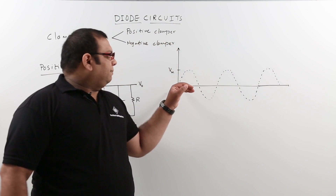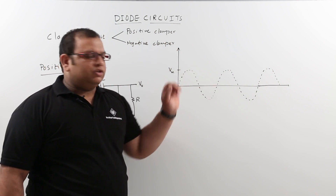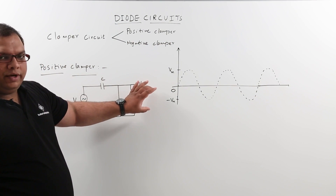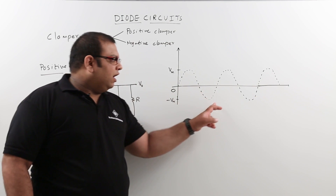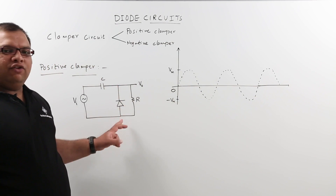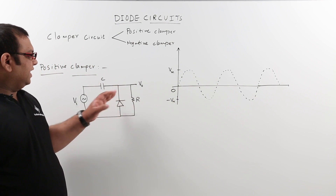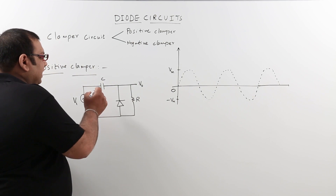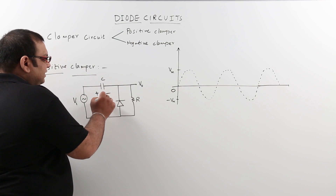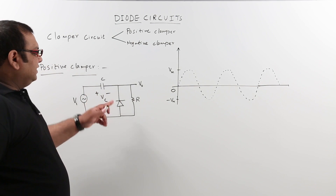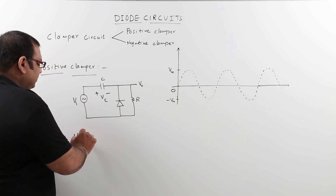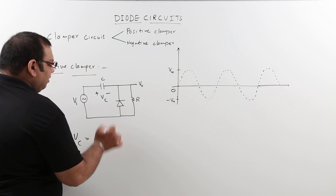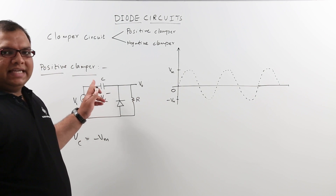During the positive half cycle, the diode will be in the off condition; when the diode is off, input will be equal to output. But during the negative half cycle, the diode will conduct, so the capacitor will charge instantly to that voltage value. The capacitor voltage VC will be equal to the maximum peak, which is –Vm, so it will be charged to –Vm.